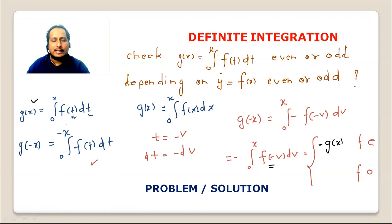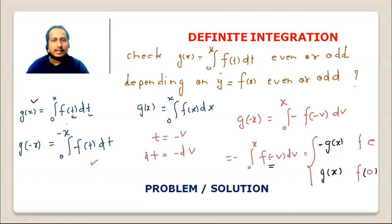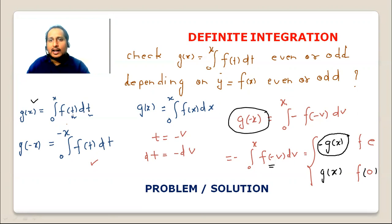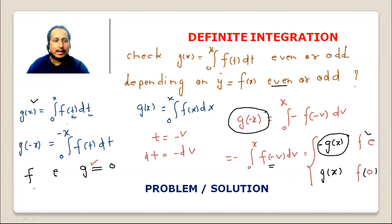यहाँ v dv हो सकता है, t dt हो सकता है, x dx हो सकता है — variable का नाम matter नहीं करता। लेकिन अगर f odd हुआ, तो f(-v) = -f(v), तो minus f(-v) = f(v), इसलिए g(-x) = g(x) हो जाएगा — यानी g even हो जाएगा। तो conclusion: f even है तो g odd है, और f odd है तो g even है।